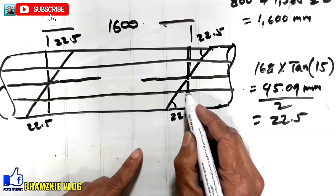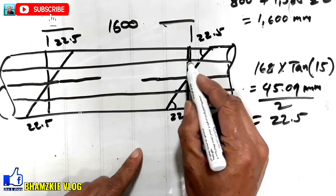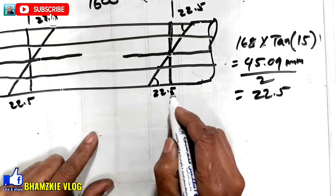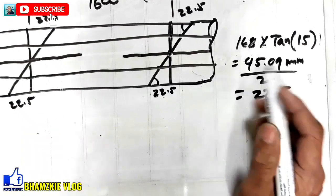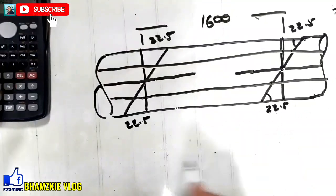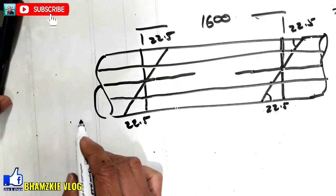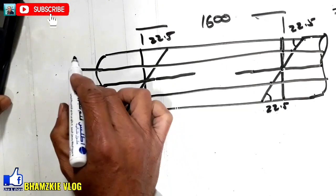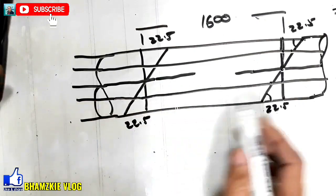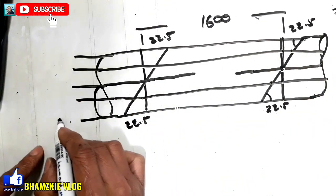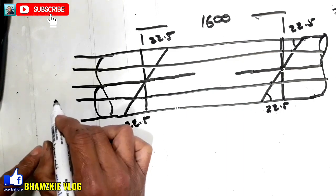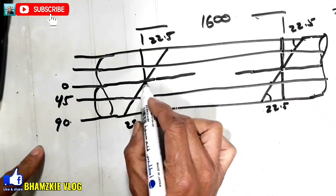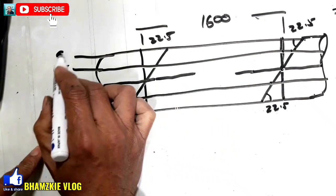Para makuha din natin yung sukat dito, mga kamital, yan yung mga sukat na yan. Ito yung, at itong 22.5 na dimension dito, ito yung dimension natin sa 90 degree. Yan, para hindi kayo malito, gagawa nyo ng markings yung inyong mga line. So, ito yung ating 90 degree, ito yung ating 45 degree, ito yung ating 0, dahil ito yung ating, dito nasa center. So, 45, 90.